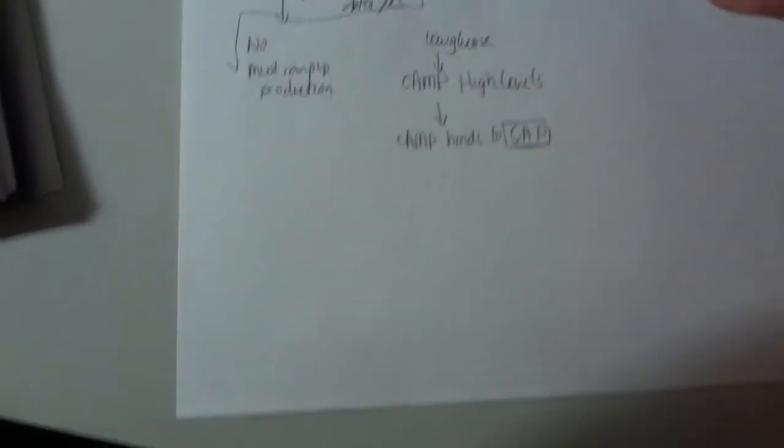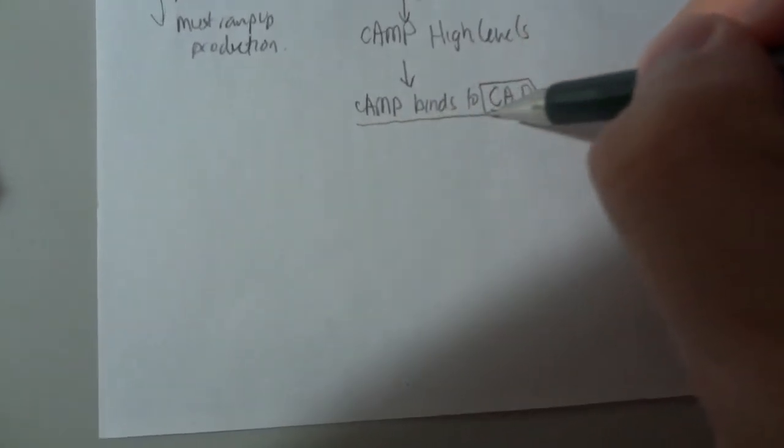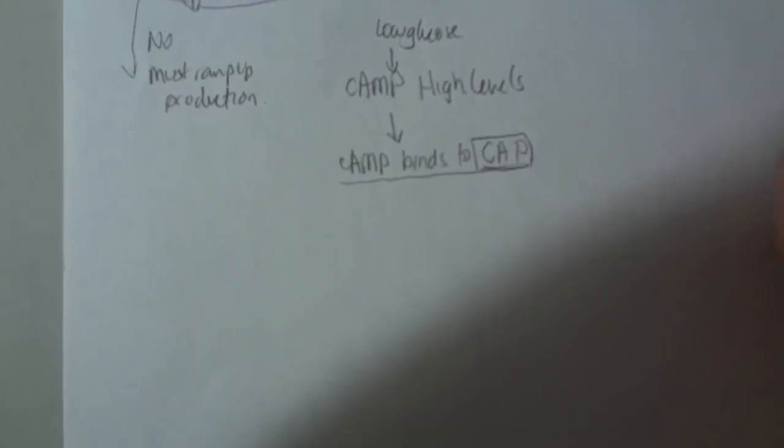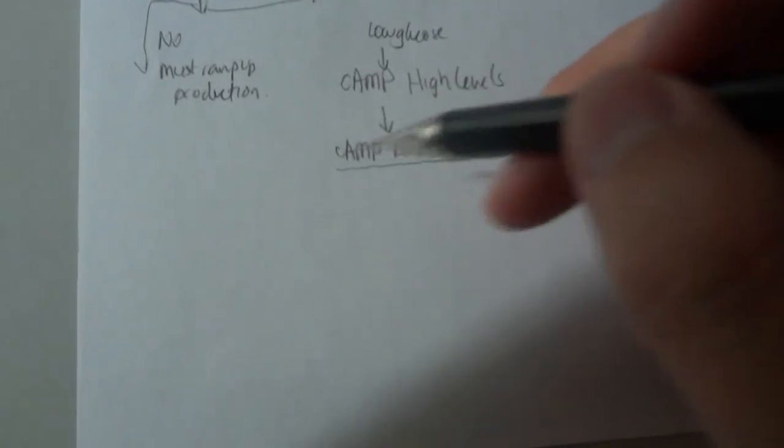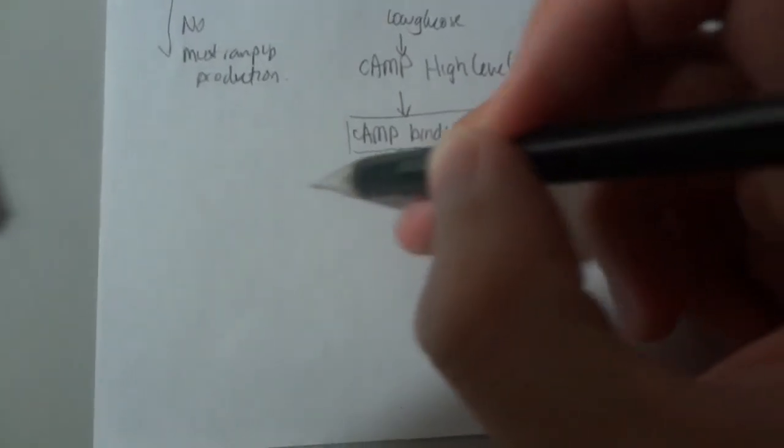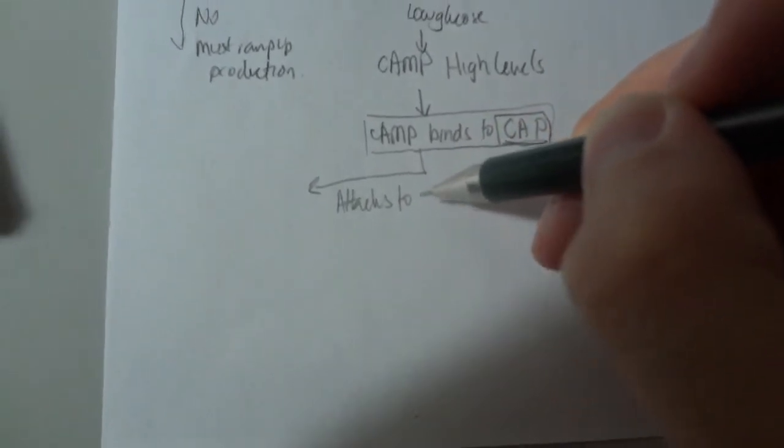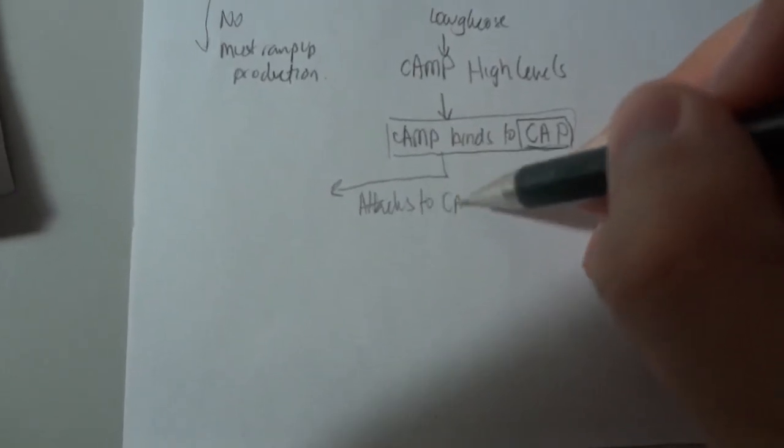So transcription happens a lot more. So basically, when cAMP binds to CAP, it activates this activator. It makes it able to attach to DNA. It attaches to a site on the DNA called a CAP site.